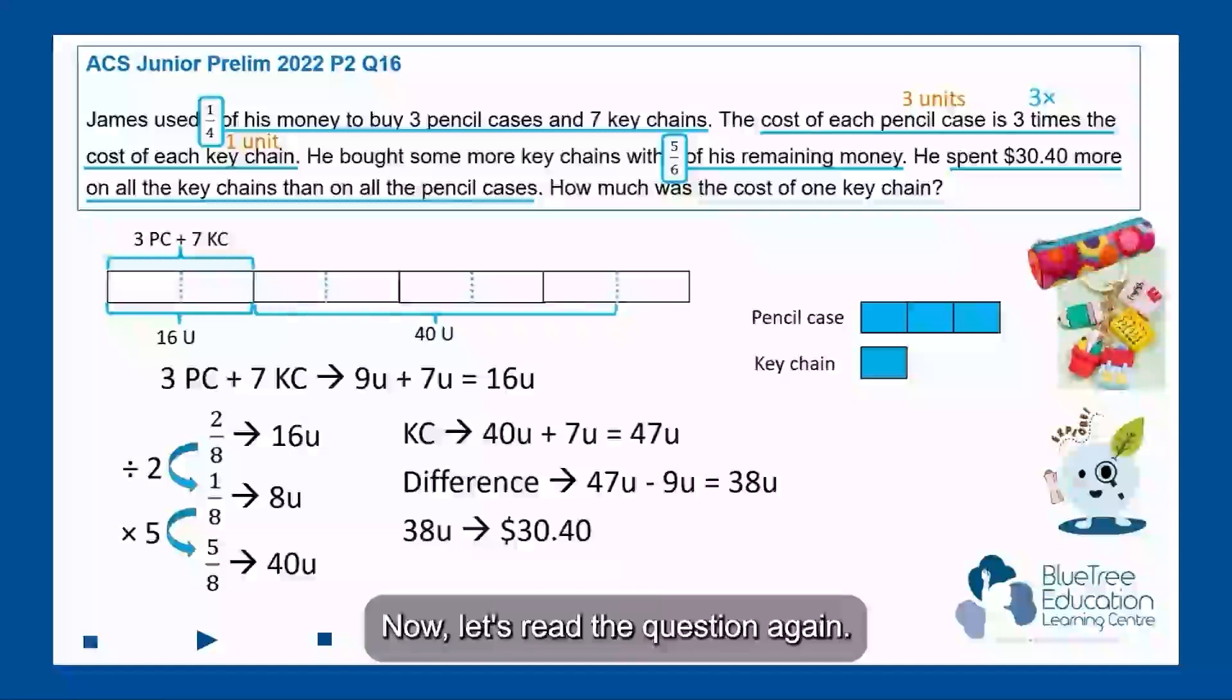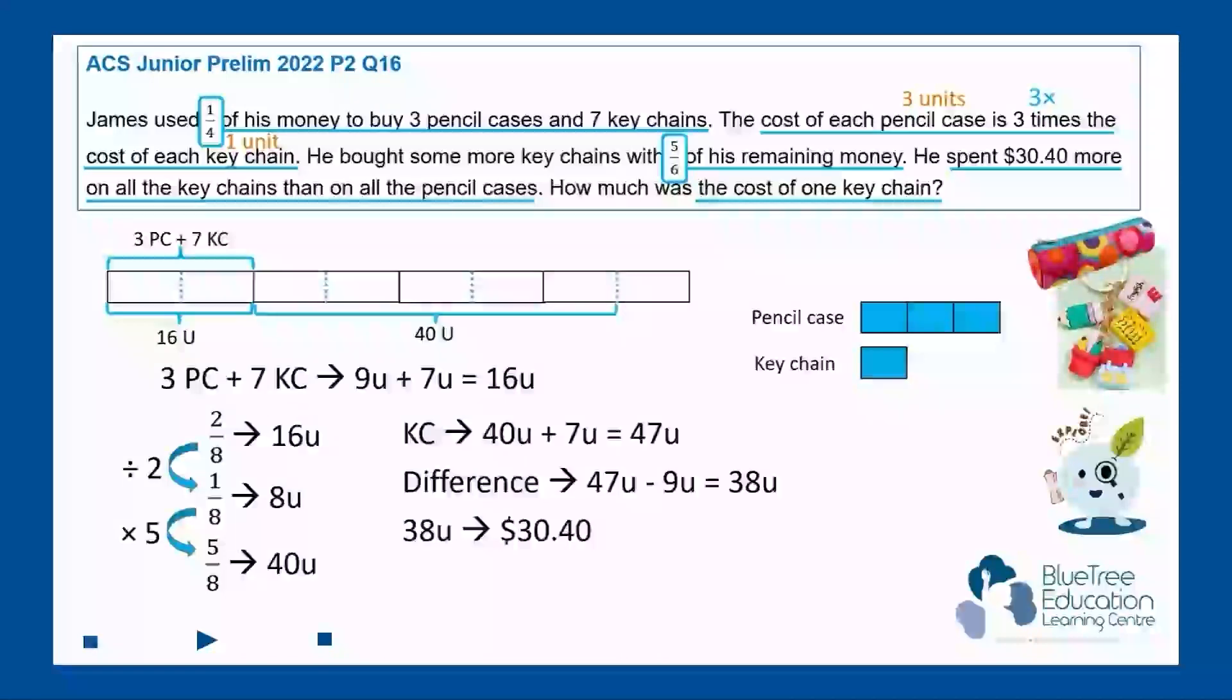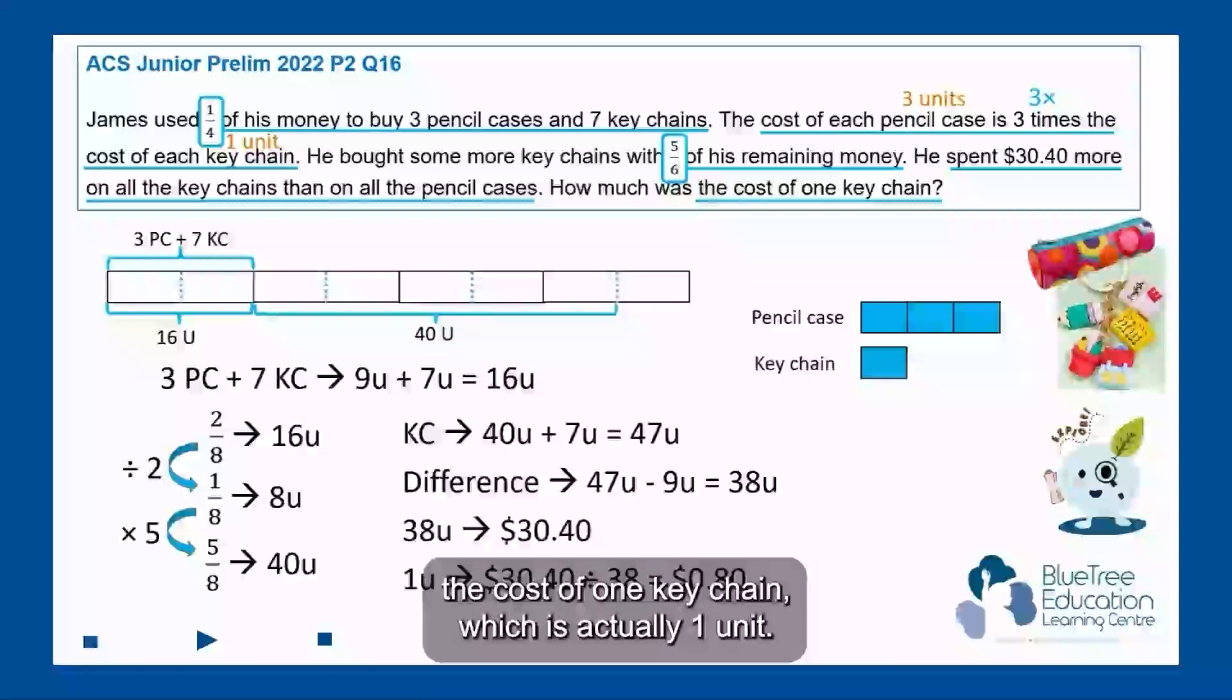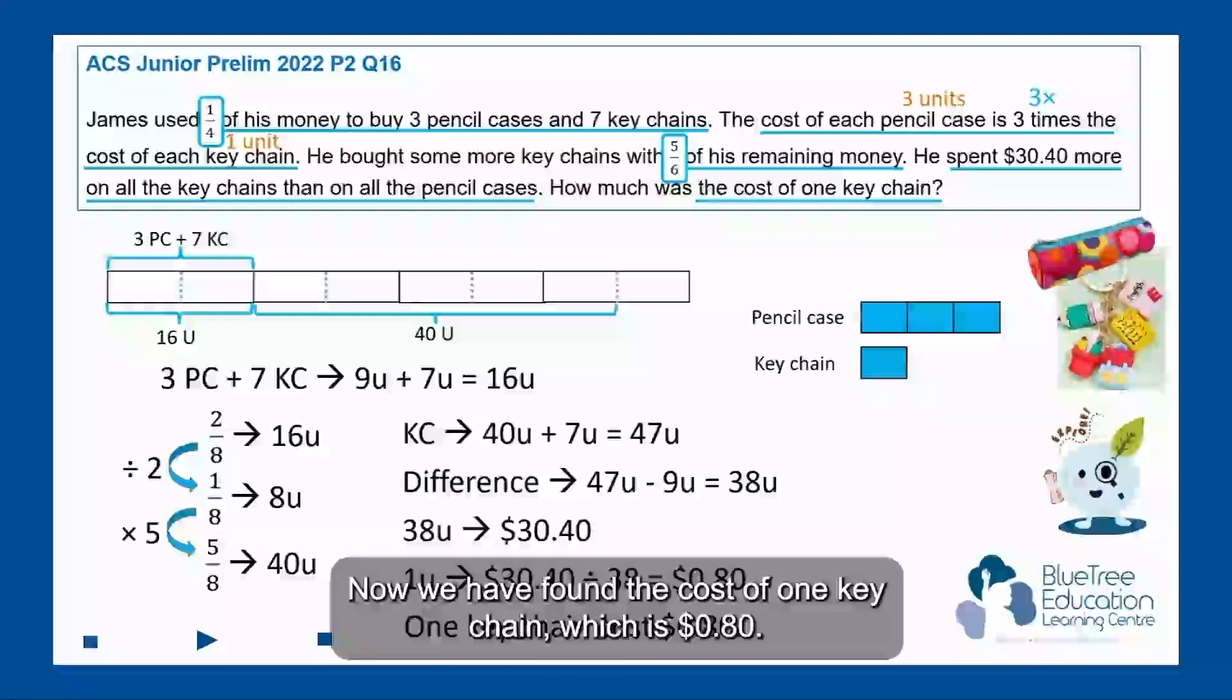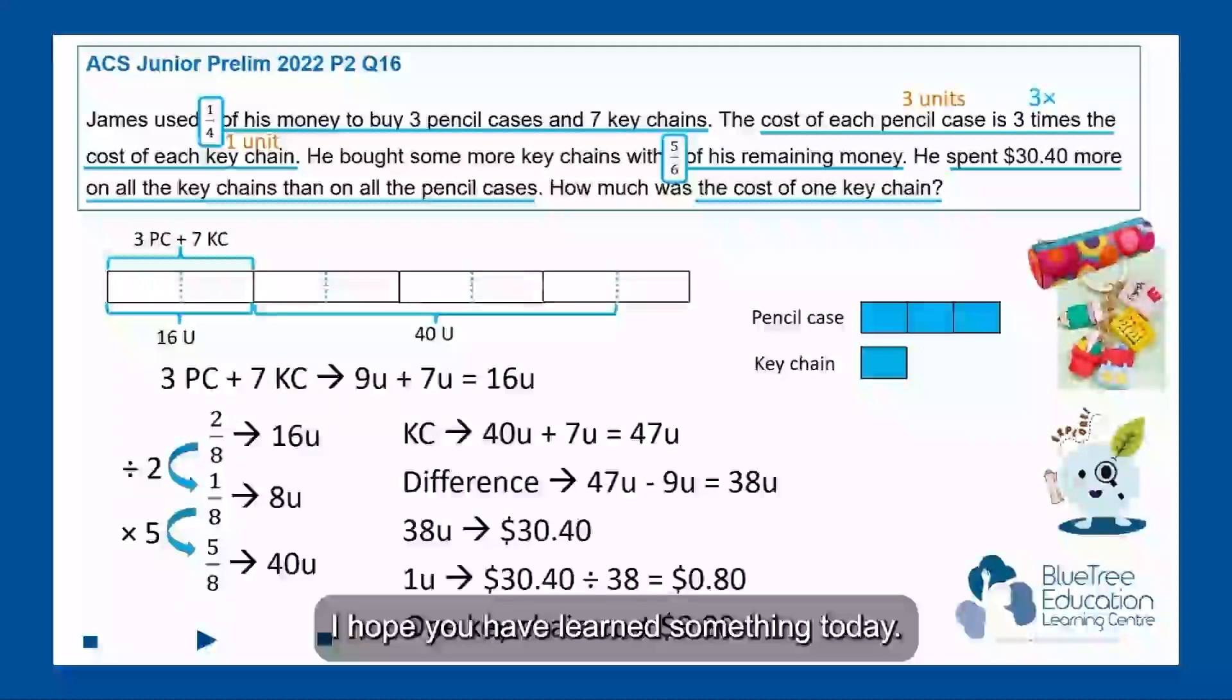Now let's read the question again. They are looking for the cost of one keychain, which is actually one unit. So let's find one unit, which is $30.40 divided by 38 to give us 80 cents. Now we have found the cost of one keychain, which is 80 cents. I hope you have learned something today. See you.